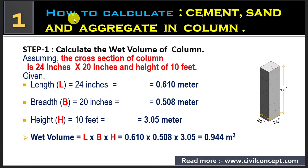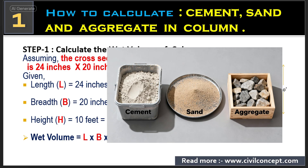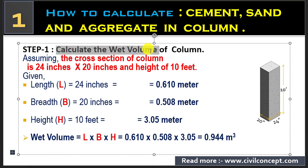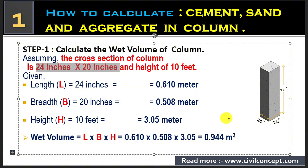Welcome to Civil Concept. In this video I am going to show you how to calculate cement, sand, and aggregate in a column. You can see here the column, and for this column we will calculate cement, sand, and aggregate required for this dimension. Step one: we have to calculate the volume of the column. Assuming the cross section of the column is 24 inch by 20 inch, and height is 10 feet.